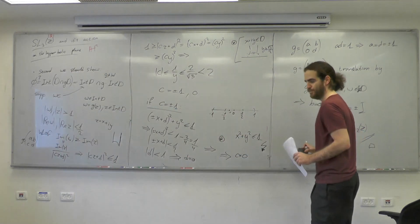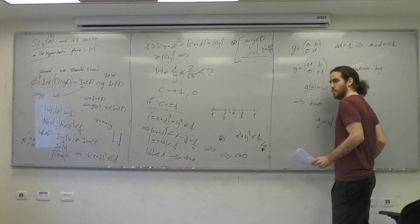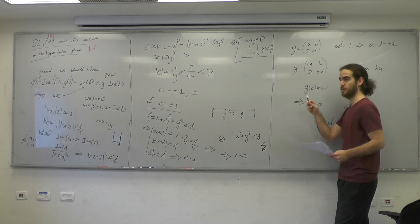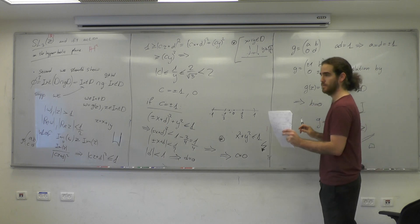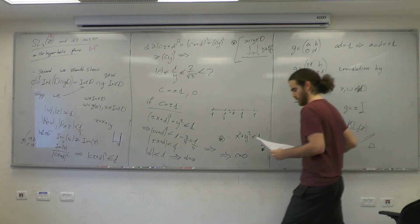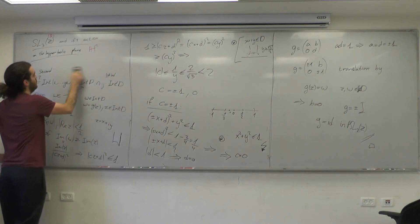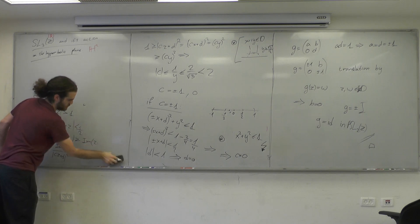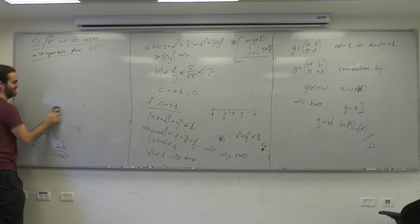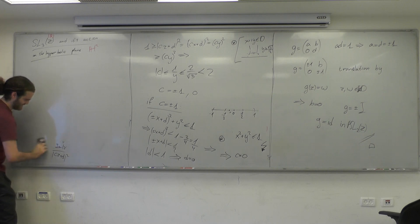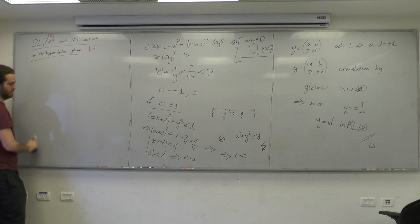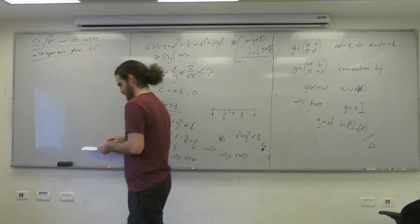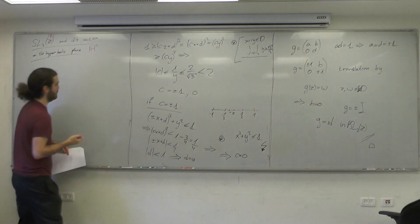Remark: we call such a thing a tessellation. Just as we know tessellations of the Euclidean plane by squares, triangles, etc., this is a special tessellation of the hyperbolic plane.